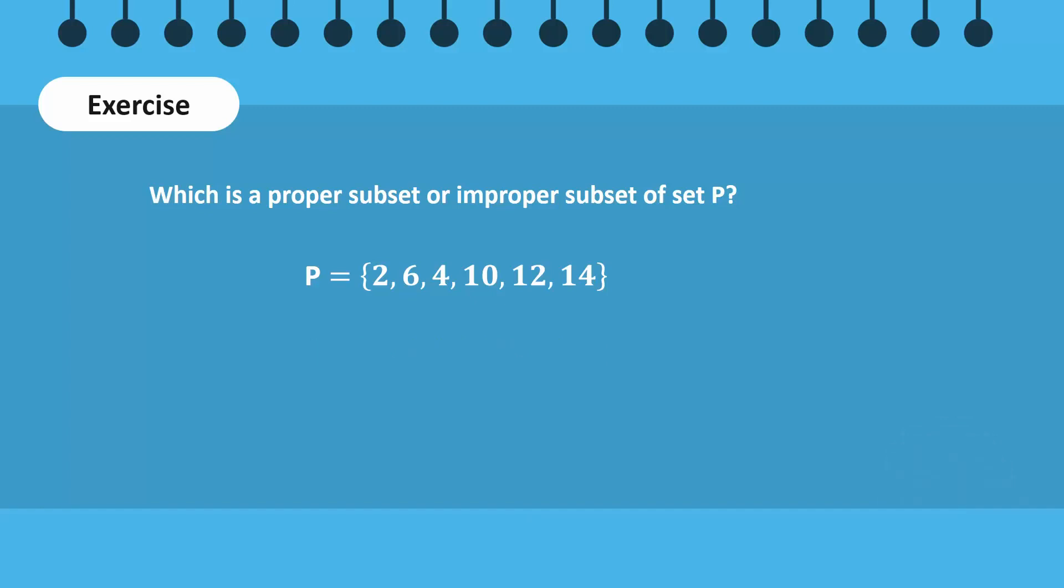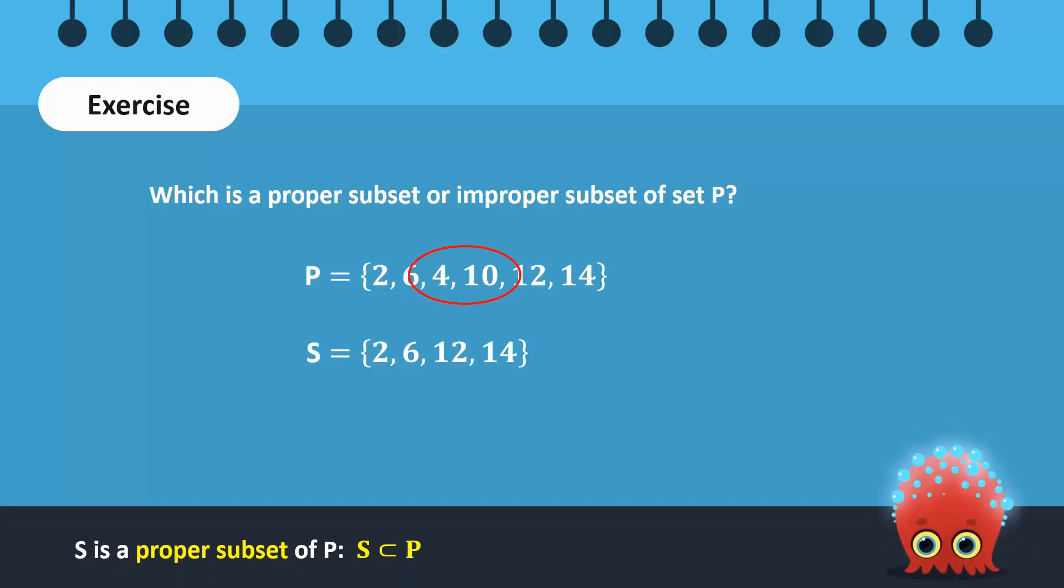On the other hand, set S contains some, but not all the elements of set P. Specifically, set S does not contain the elements 4 and 10. Hence, it is a proper subset of P.